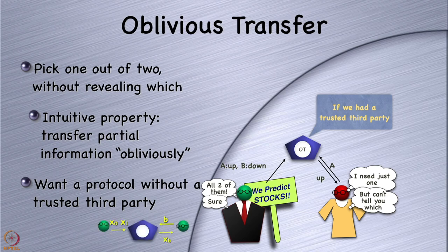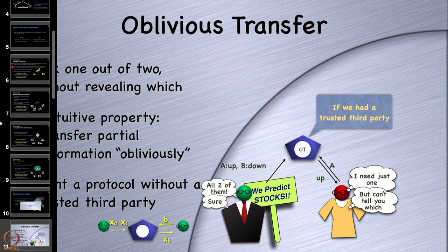The functionality is: input from the first party is x0, x1; input from the second party is a bit b; and the output, only to the second party, is x_b. That defines the functionality of oblivious transfer — what we'd like to do is emulate the trusted party carrying out that functionality.